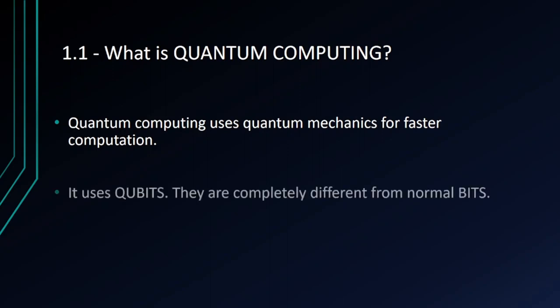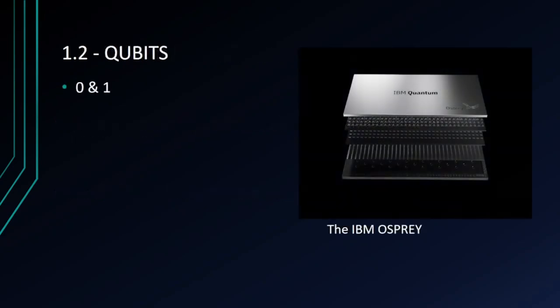Quantum computing, as I said before, uses qubits. They're completely different from normal bits. Qubits are the building blocks of quantum computing. They represent and process information using quantum properties. Classical bits can be zero or one, but in a qubit it can exist in a combination of zero and one simultaneously.